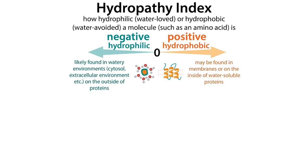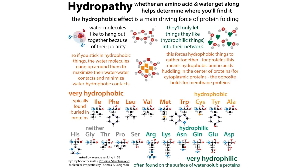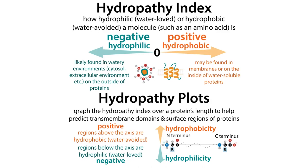I've gotten ahead of myself because I'm talking about regions. Although we can give a hydropathy index to individual amino acids, these individual amino acids are going to link together to form a protein, and it's in the context of that protein that we have to consider whether regions of a protein are hydrophilic or hydrophobic. It's not enough to just have one hydrophobic amino acid to have a membrane protein. This is where hydropathy plots come in - here we graph the hydropathy index over a protein's length to help predict those regions.